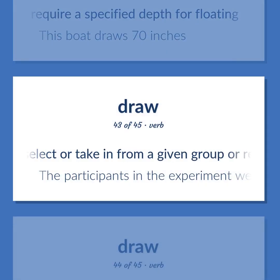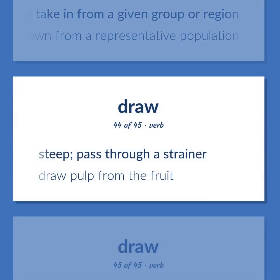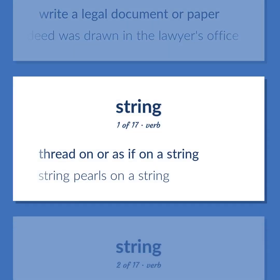Select or take in from a given group or region. The participants in the experiment were drawn from a representative population. Steep — pass through a strainer. Draw pulp from the fruit. Write a legal document or paper. The deed was drawn in the lawyer's office. Thread on or as if on a string.